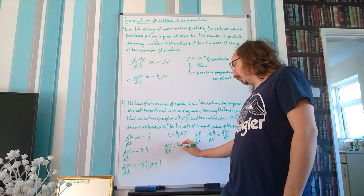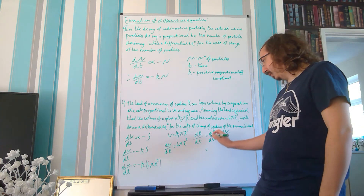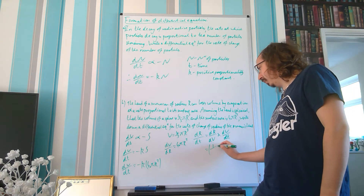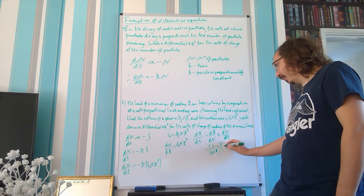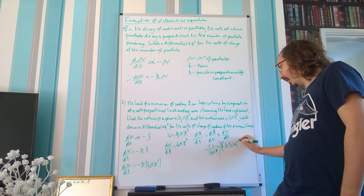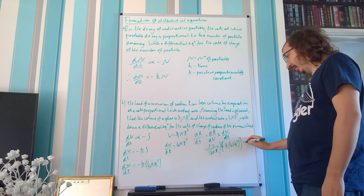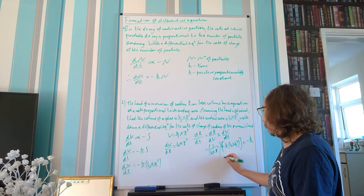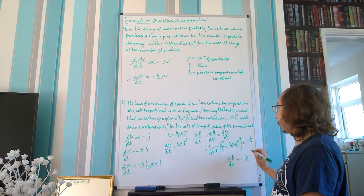Differentiating V = (4/3)πr³ gives dV/dr = 4πr². So dr/dV equals 1 over 4πr². Multiplying by dV/dt, which is minus k times 4πr², the 4πr² terms cancel, leaving just minus k. Therefore dr/dt equals minus k.